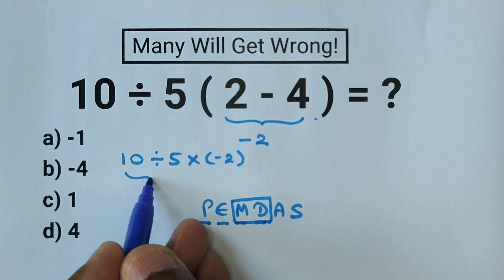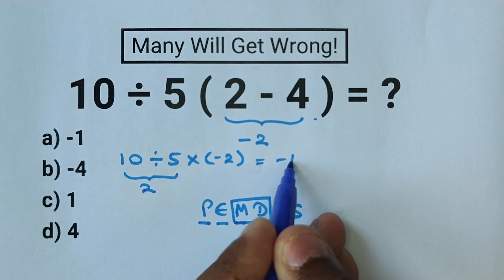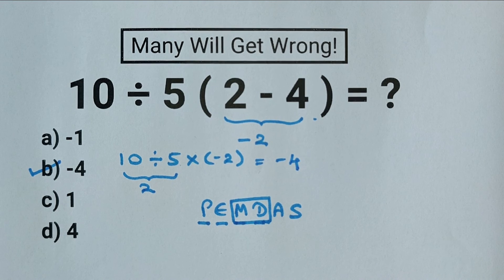10 divided by 5 is 2. And now we have 2 times negative 2, which equals negative 4. So the correct answer is option B.